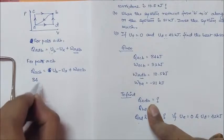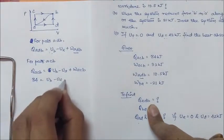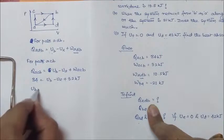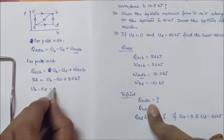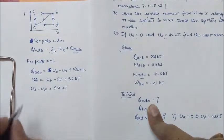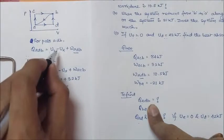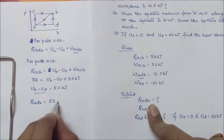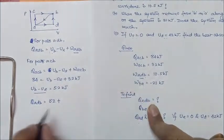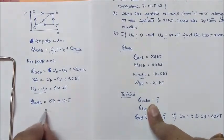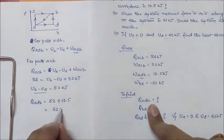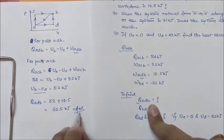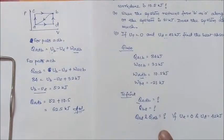So 84 = (UB minus UA) plus 32, which gives UB minus UA = 52 kilojoules. Now putting this into our equation for path ADB: QADB = 52 plus 10.5 = 62.5 kilojoules.